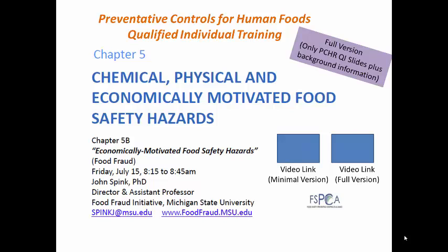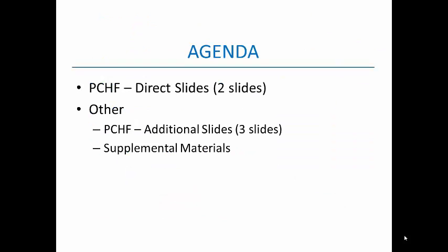This is within Chapter 5, which covers chemical, physical, and economically motivated food safety hazards. First, the agenda. There are several direct slides that apply to and are titled Economically Motivated Food Safety Hazards. There are other slides within the qualified individual training that have some application to food fraud or EMA, and we'll cover those as well. This is a full version of the video, so we cover more background on food fraud outside of the qualified individual training, but it provides insight on how you may address compliance.